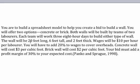We have the materials for the wall. Each wall is 20 feet by 6 feet by 2 feet, and then we have the cost of materials. Concrete is $3 a cubic foot, and bricks are $2 a cubic foot, and we must add a margin of 30% to our expected cost to come up with our final bid number.